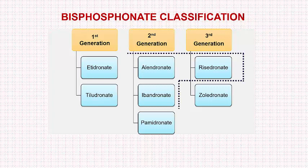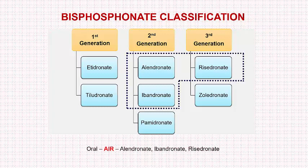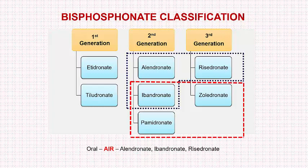Alendronate and ibandronate from the second generation, and risedronate from the third generation, are used orally. We can remember this by the mnemonic AIR: Alan, Iban, and Risse — these can be used orally. Ibandronate and pamidronate from the second generation, and zoledronate from the third generation, are used intravenously. We can remember this by the mnemonic ZIP: Zoli, Iban, and Pami — which are used intravenously.